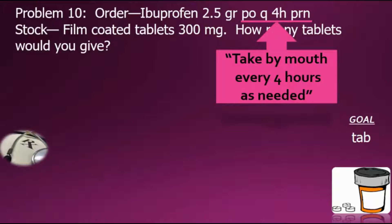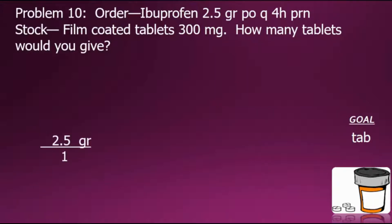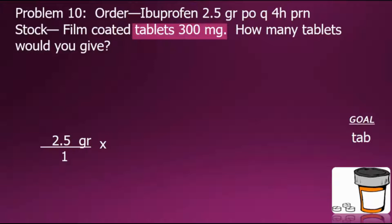Starting with the order of 2.5 grains expressed as a fraction, we have the following with a denominator of 1 for an equivalent value. We need to convert our current order from grains into tablets. The problem gives us a relationship between tablets and milligrams, so this will require a preliminary step to convert our order from grains into milligrams, and then further convert it into tablets.